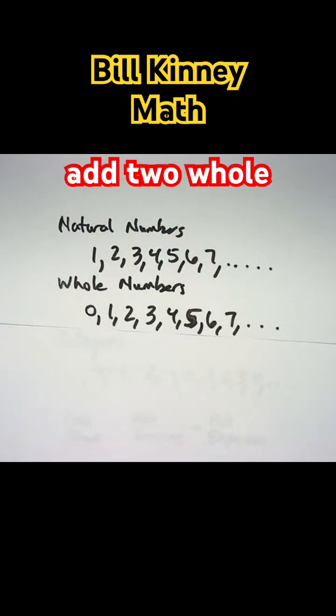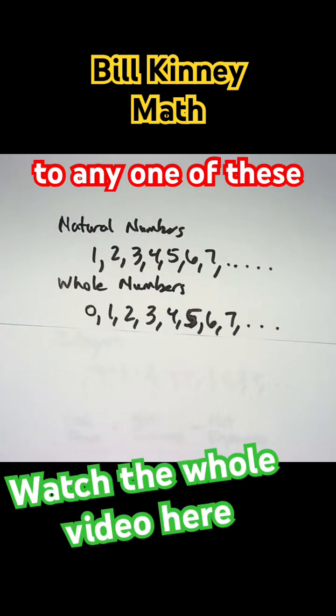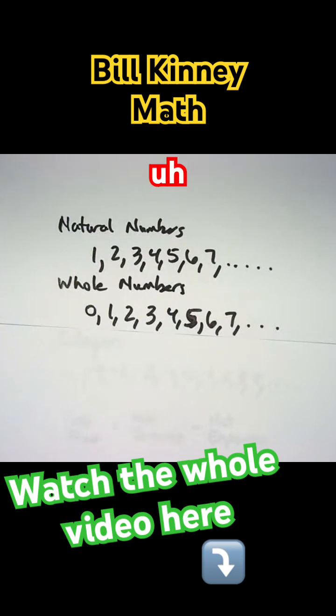If you add two whole numbers, you get another whole number. That is also closure. And 0 has the additional property that if you add 0 to any one of these numbers, you get the same number back. For example, 5 plus 0 is 5.